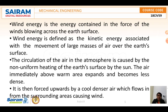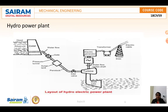The circulation of air in the atmosphere is caused by the non-uniform heating of the earth's surface by the Sun. The air immediately above a warm area expands and becomes less dense. Wind is one renewable energy source used in many countries as a strategy to reduce reliance on fossil fuels.